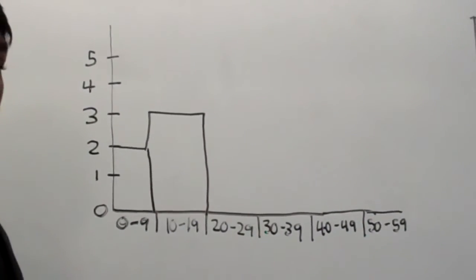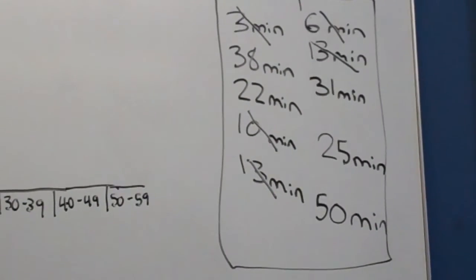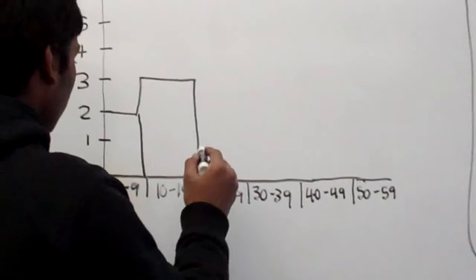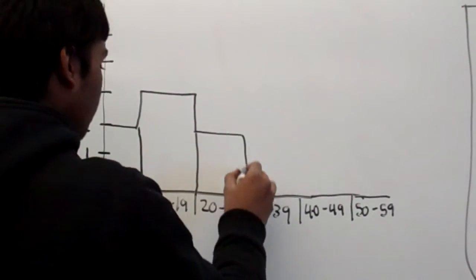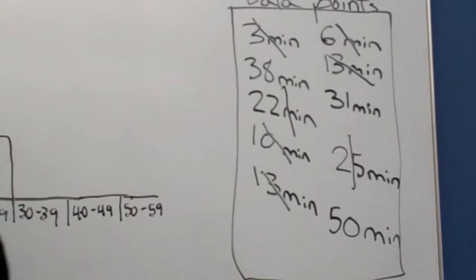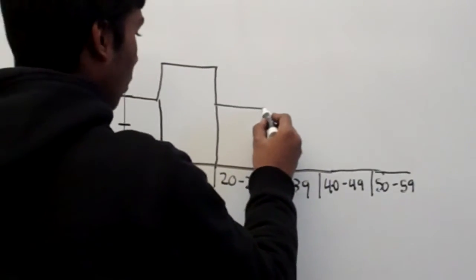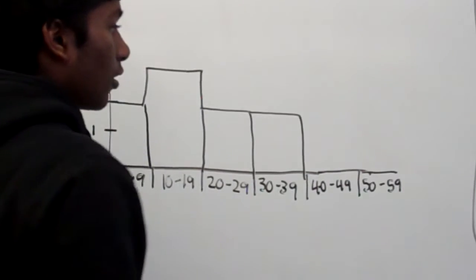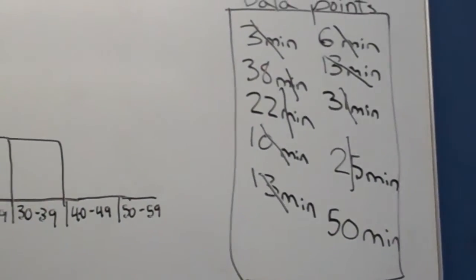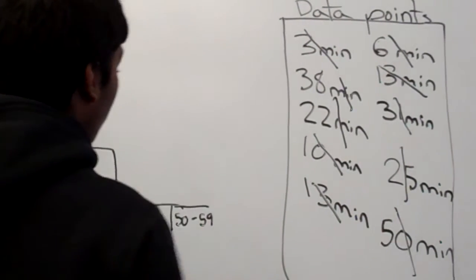We do the same for every other bar, so I'll just fill that in quickly. There's two people here. There are two people here as well. There are zero people in this point and there's one person here.